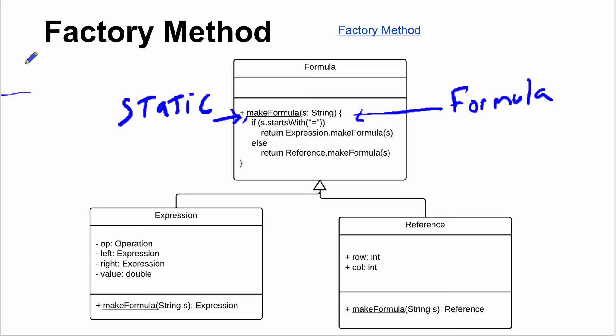The Factory Method lets you return subtypes of the declared return type — something you cannot do with a standard constructor. It can also return null if the user passed a bad string, or throw an exception, though a constructor can throw exceptions too. That's another reason to use the Factory Method pattern.